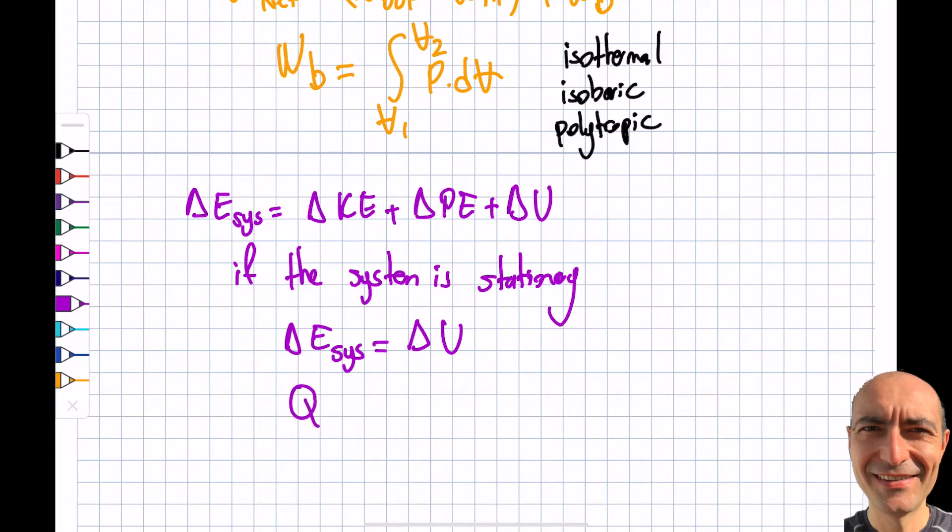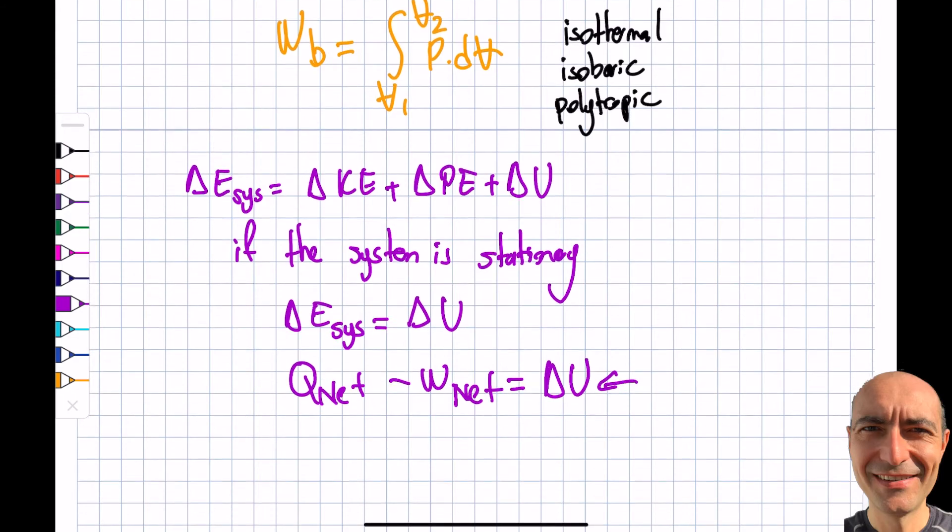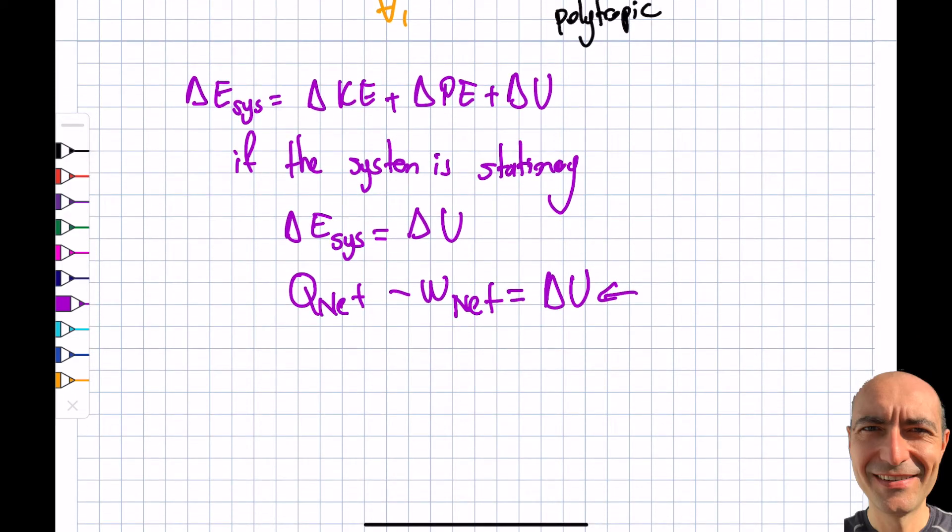So I can also write Q_net minus W_net equals delta U. That's pretty much it, except there's one other thing I want to talk about today.